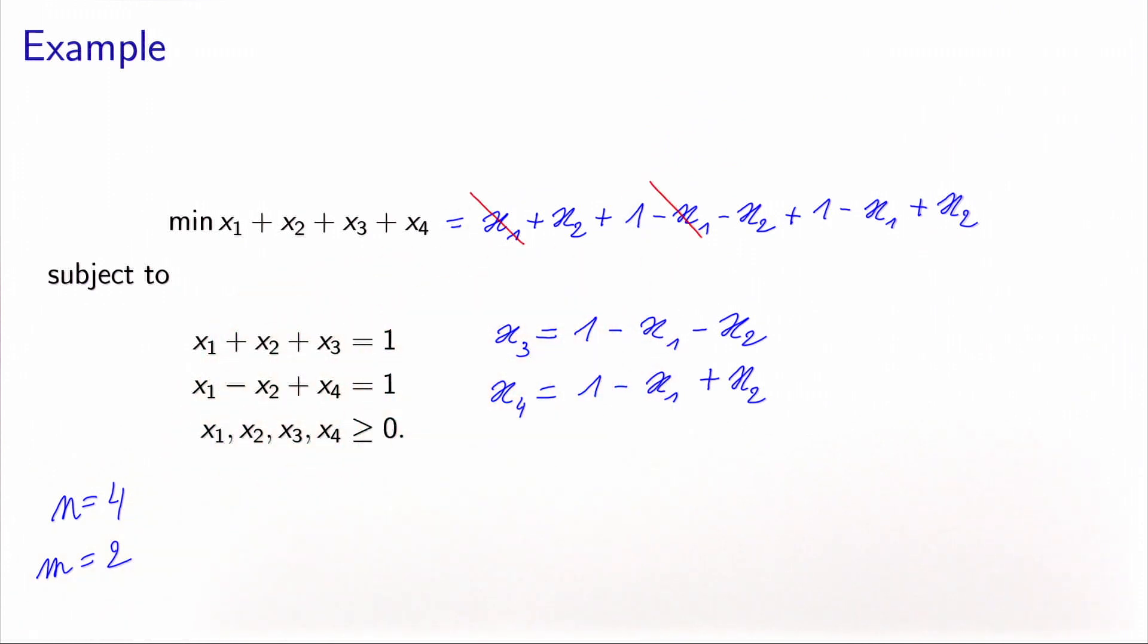So there is some simplification. x1 cancels with this one, x2 cancels with this one. And we have also seen that constants do not matter in an objective function, so we can remove the 1 here. So we are left with an objective function which is equal to minus x1 plus x2. So we have reduced the dimensionality of the problem.